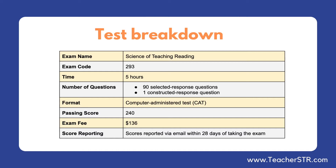Below you will find a diagram for the test breakdown. The allotted time for the test is a total of five hours. The exam includes a total of 90 selected response questions and one constructed response question. The exam is administered on the computer, and a passing score is 240. This exam costs $136 to take, and scores are reported within 28 days of taking the test.